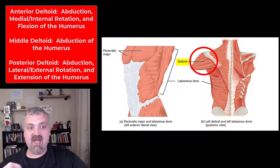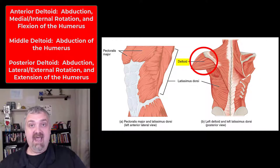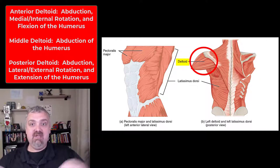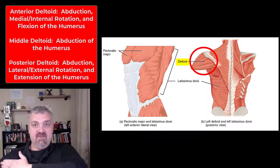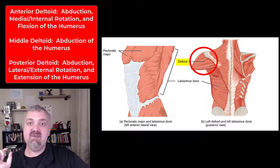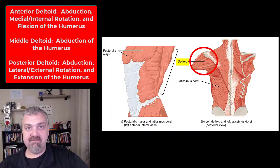The anterior deltoid is involved in abduction, but also flexion and medial rotation, because when the front of the delt contracts, it brings the arm medially. So for the anterior deltoid, think abduction, medial rotation, and flexion of the shoulder.